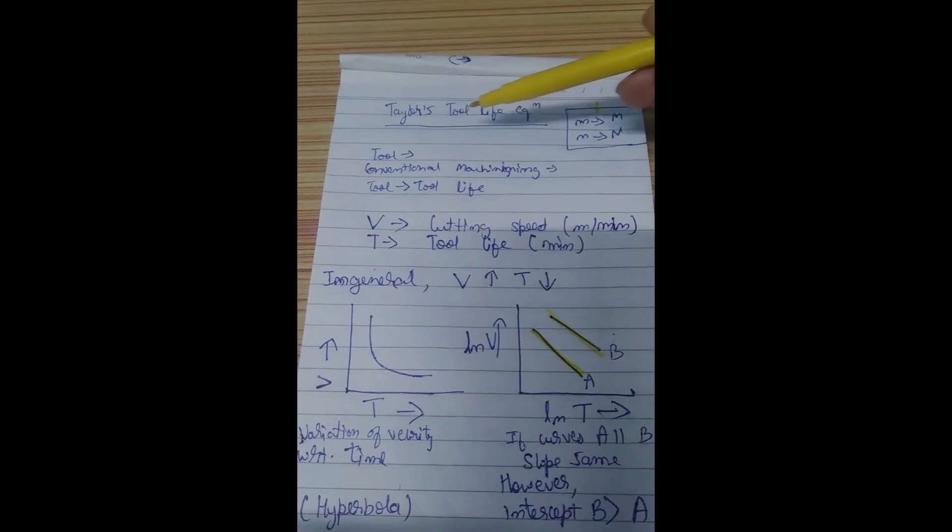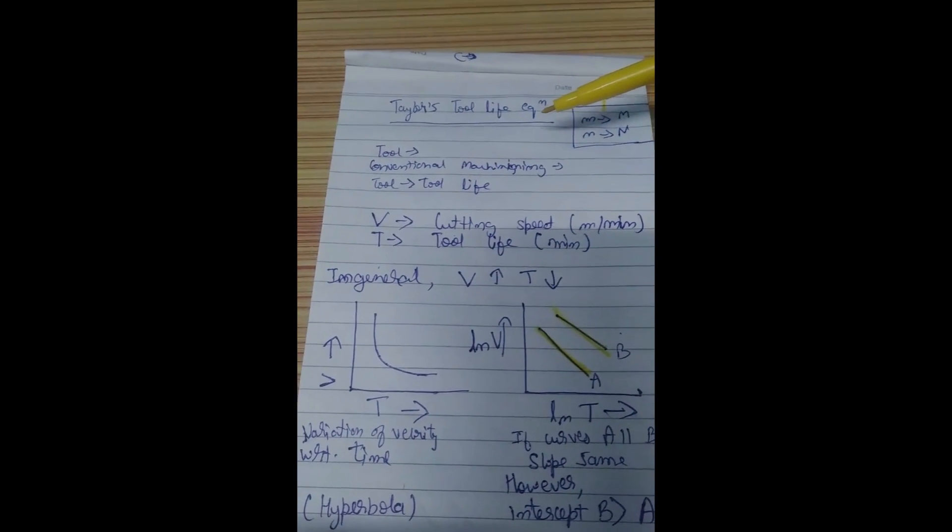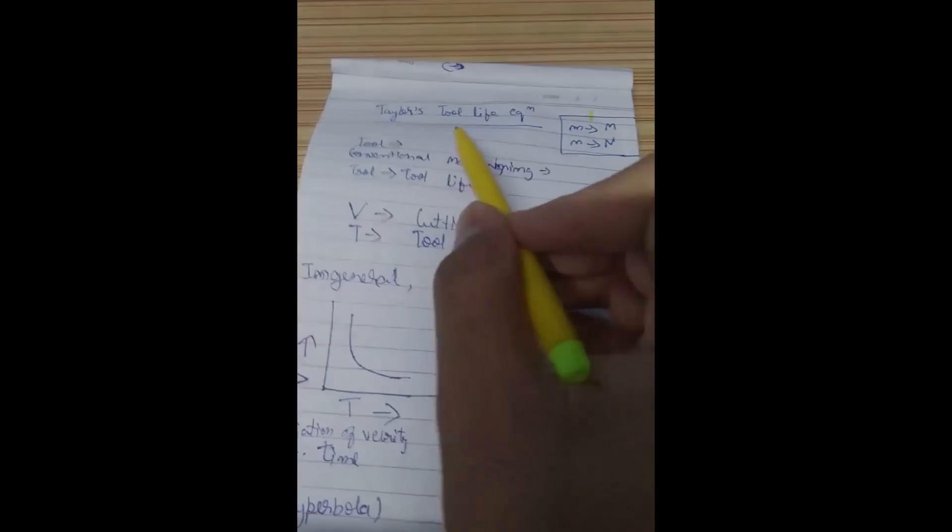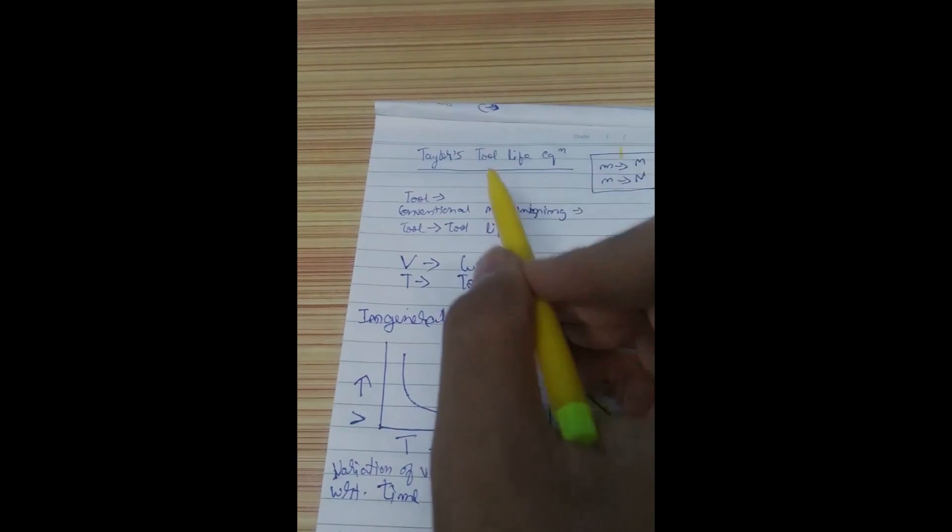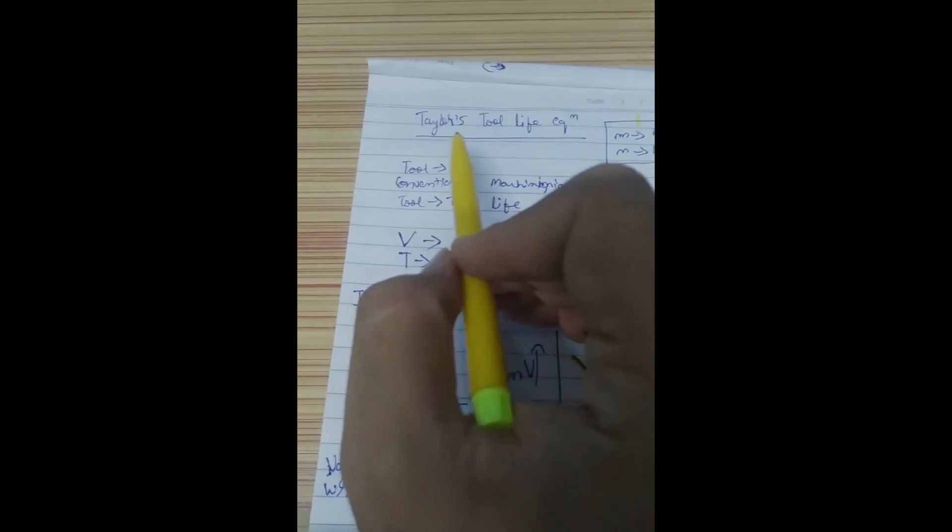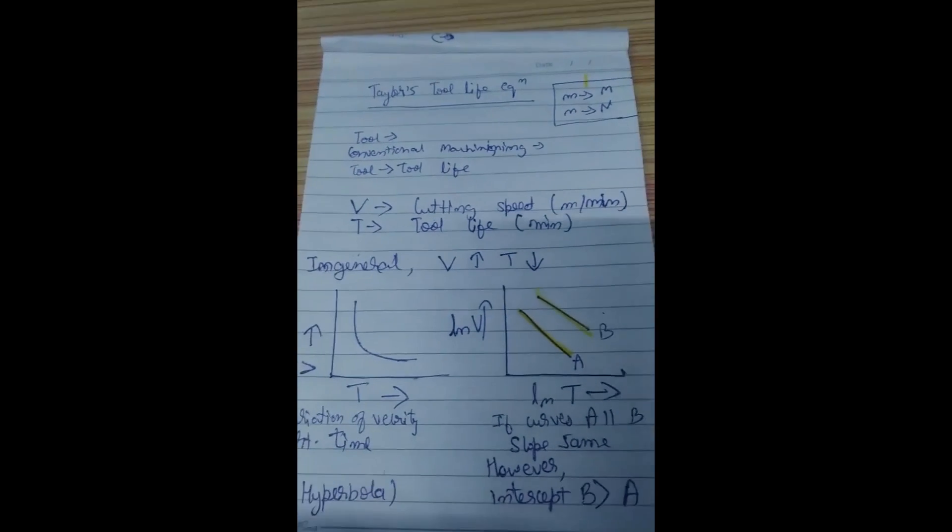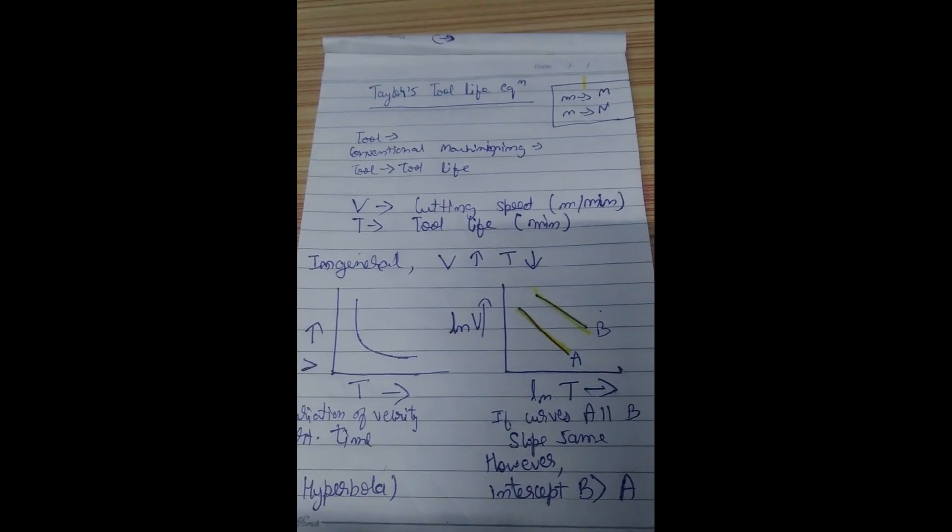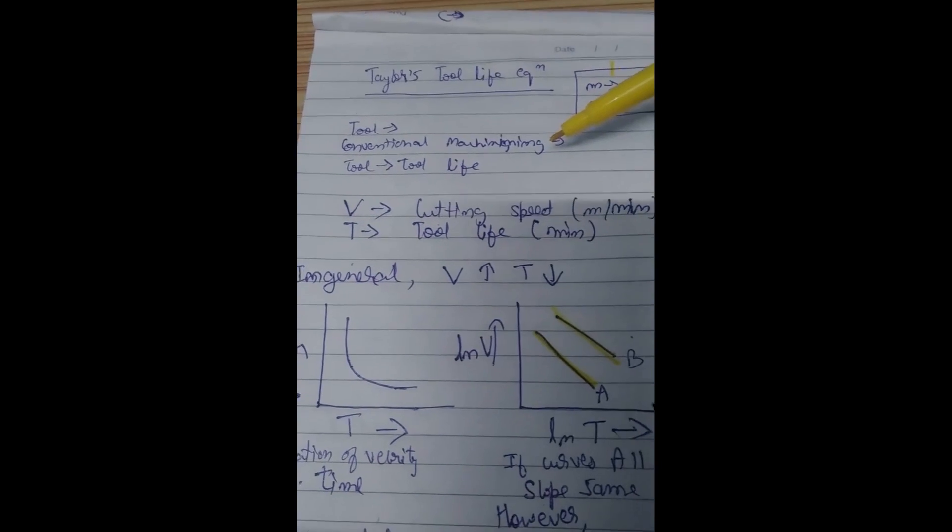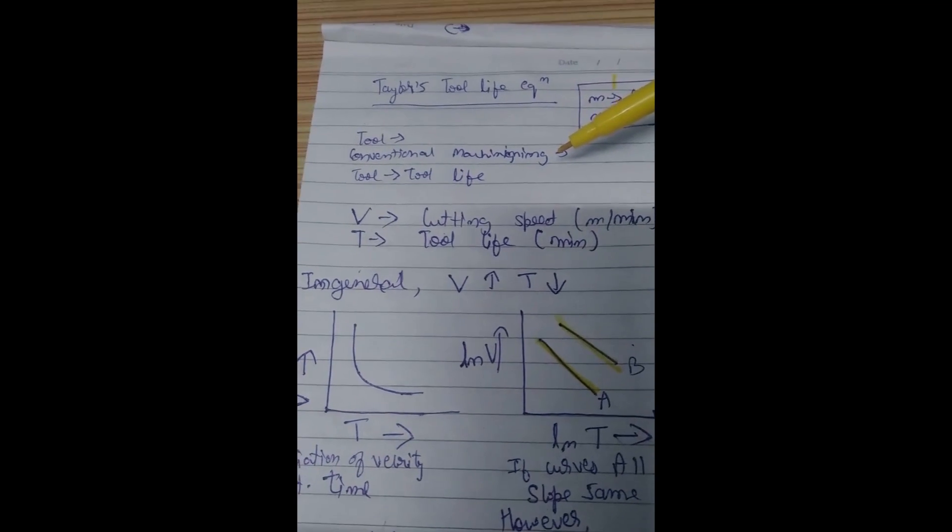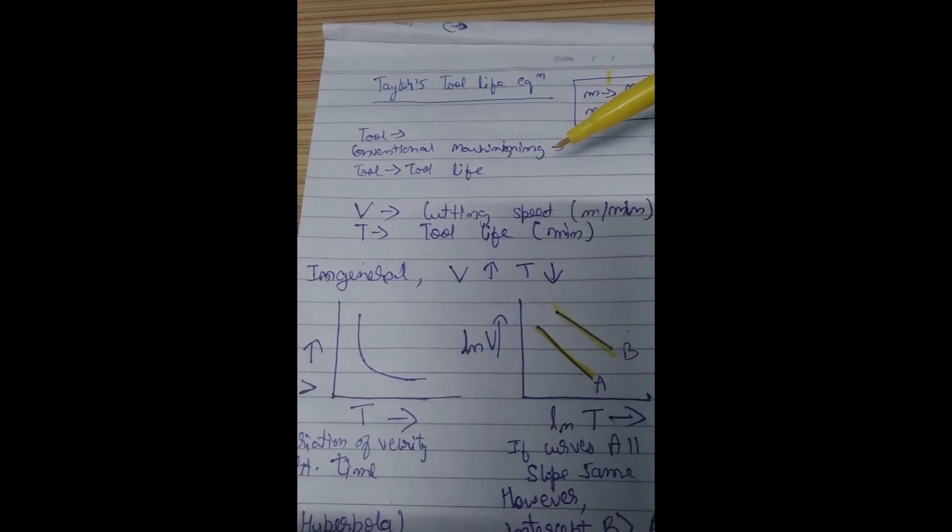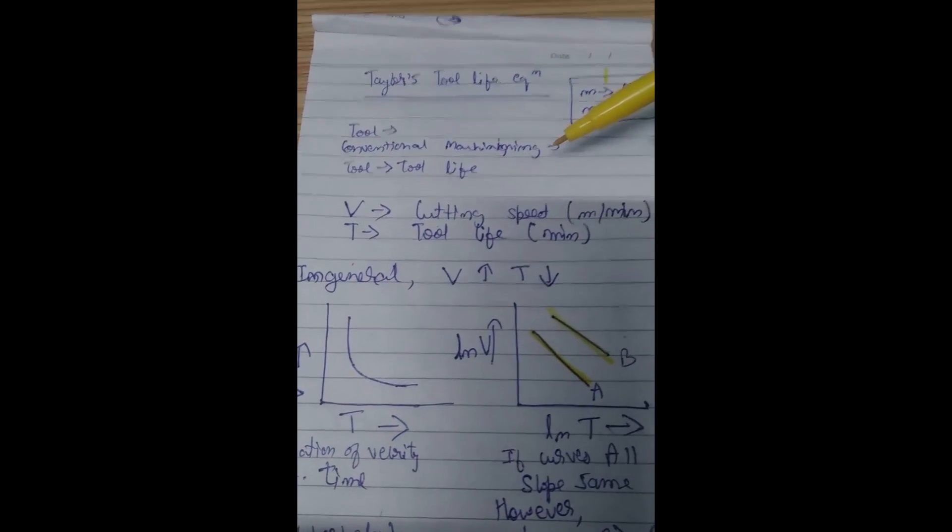So Taylor's tool life equation basically is an equation relating the tool life, and this equation was given by the scientist Taylor. So basically when we deal with machining, probably the conventional machining, it says that in order to remove the material from the workpiece the tool needs to be harder than the workpiece.